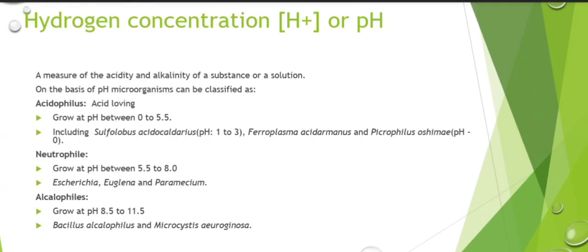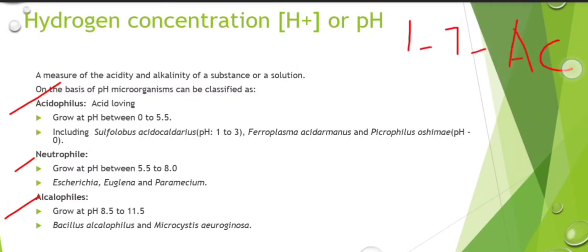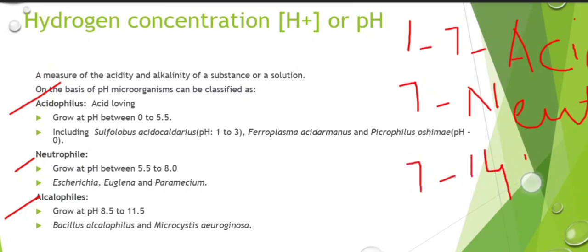Next is the effect of pH — hydrogen ion concentration, which is the measurement of acidity and alkalinity. pH is divided into three categories: acidophiles, neutrophiles, and alkalophiles. When we measure pH: 1 to 7 is acidic, 7 is neutral, and 7 to 14 is basic.